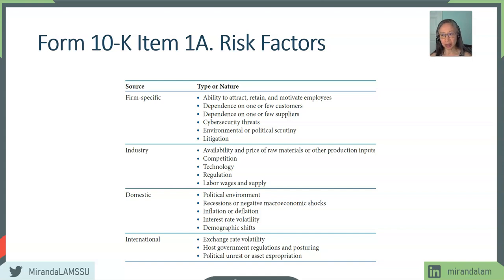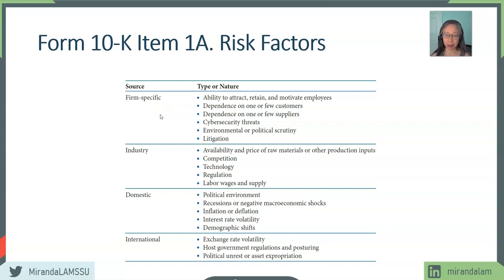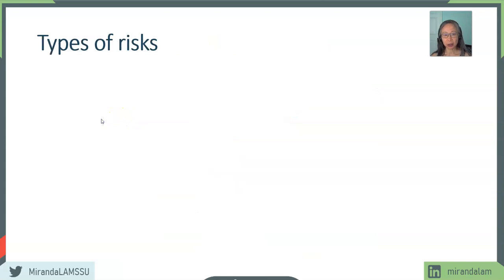There are some cases where a company may be able to associate a dollar amount — for example, pending litigation. The other way to look at this is looking at what competitors have faced in the area. But most of these are qualitative risk factors. Next, we can also look at quantitative risk factors that we can ascertain based on the firm's financial statements.